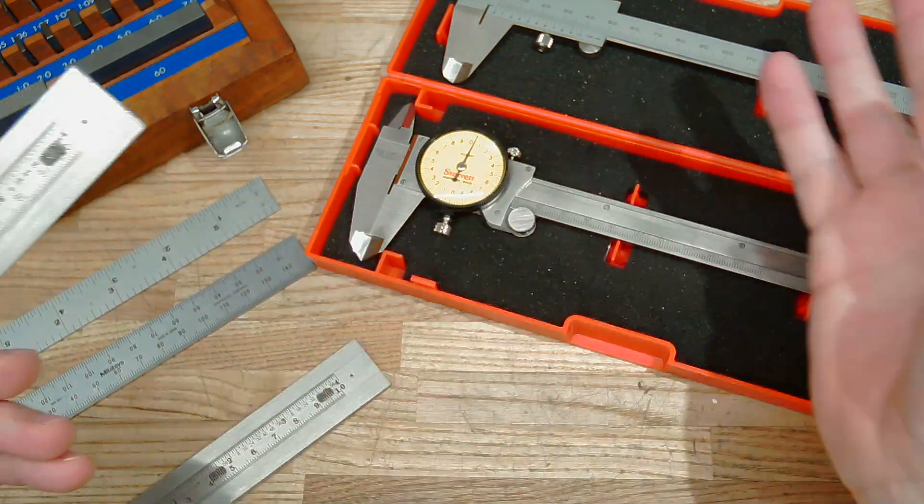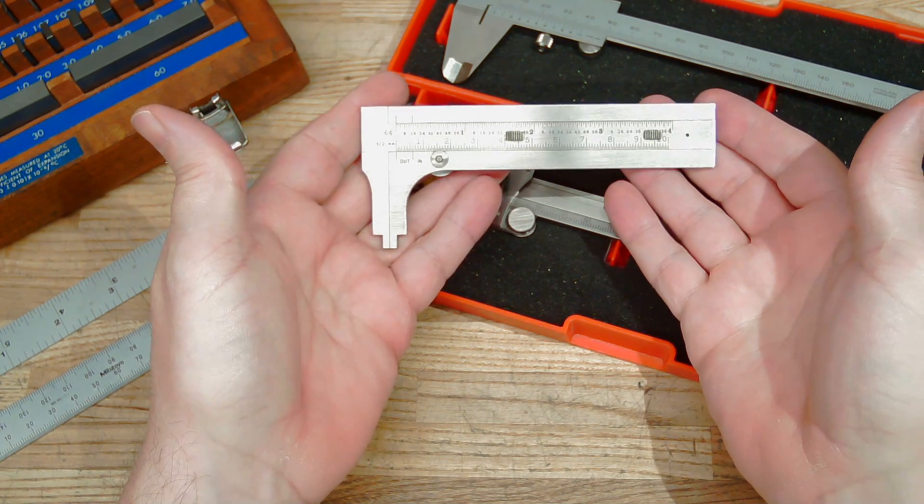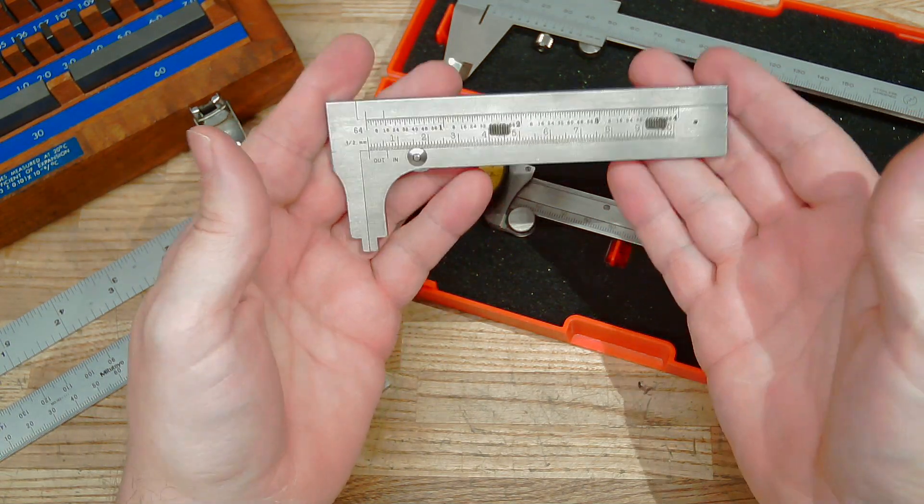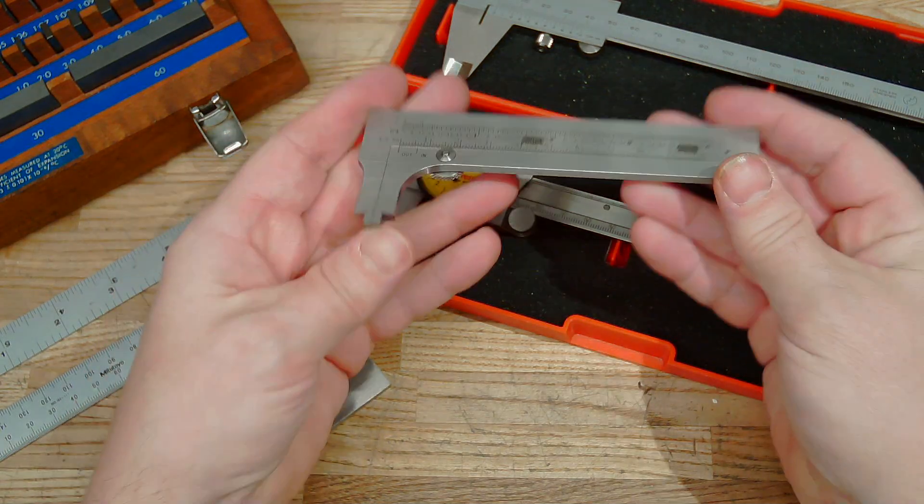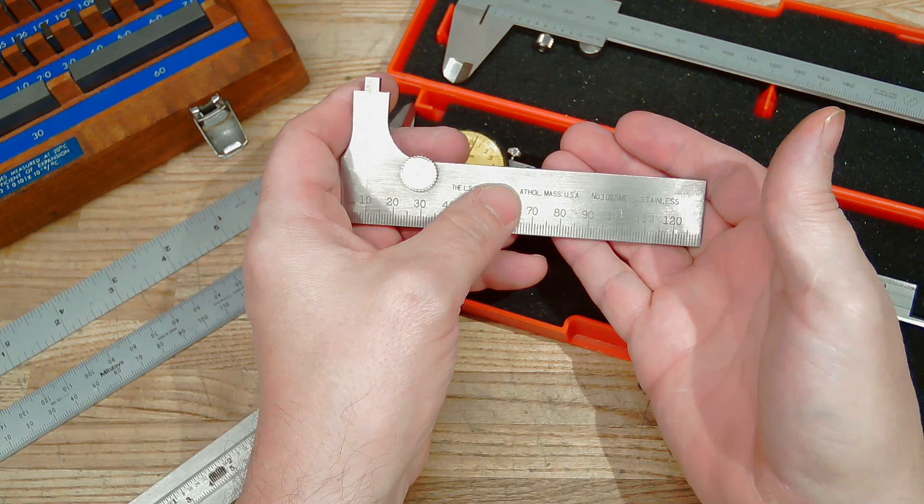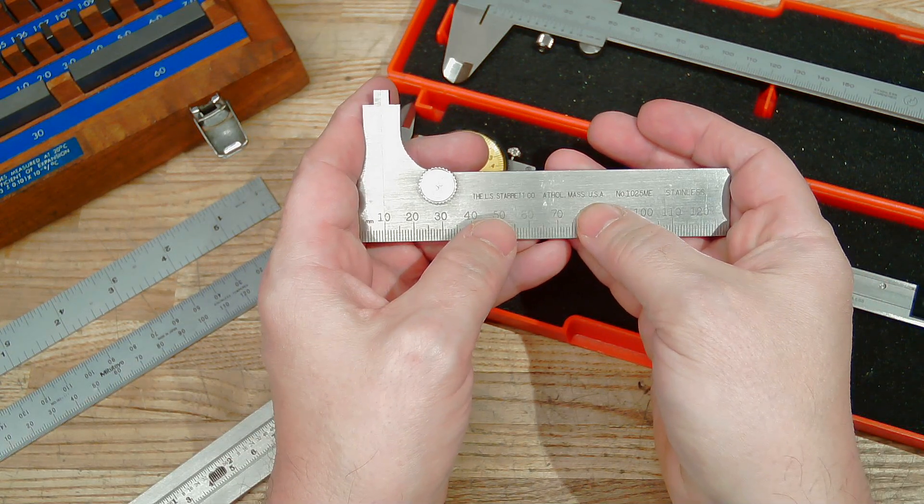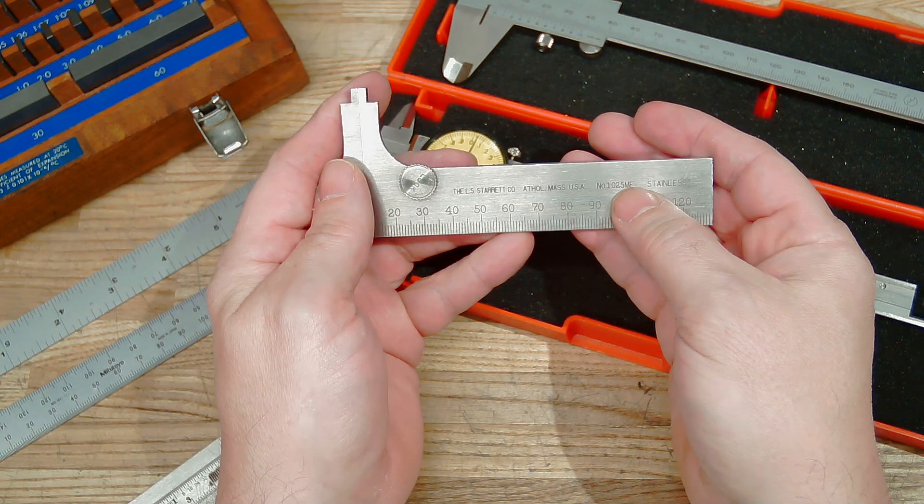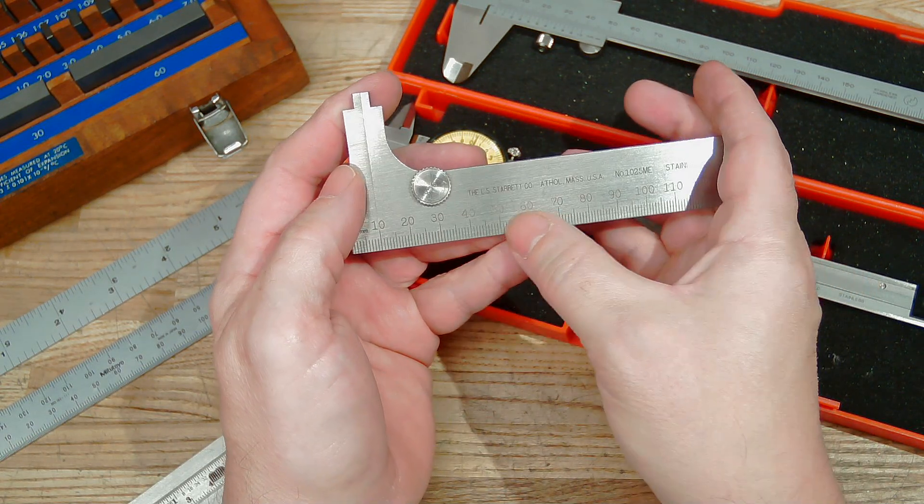Let's have a look at some small measuring equipment and let's begin with this pocket caliper. This is one of my favorite and most often reached-for tools. This caliper is by the L.S. Starrett Company of Athol, Massachusetts, United States of America, and this here is model number 1025ME - ME for metric. Notice that the rule on the bottom side of this caliper is graduated in millimeters.